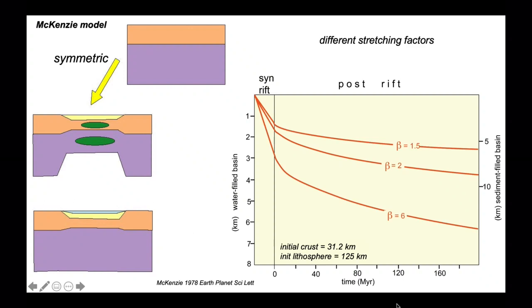Different stretching factors generate different curves. Here we have a stretching factor of 1.5, a little less than in the cartoons, and a factor of 6, significantly more. A useful rule of thumb: the syn-rift and post-rift stages approximately have the same subsidence associated with them. The rates are different, but the finite amount of subsidence is approximately the same.